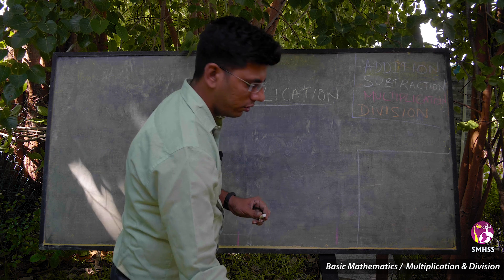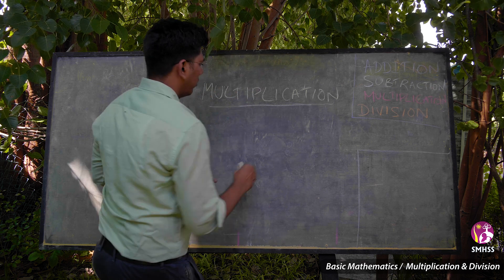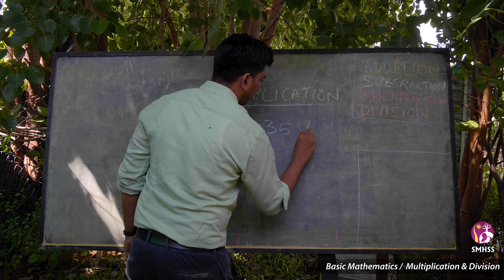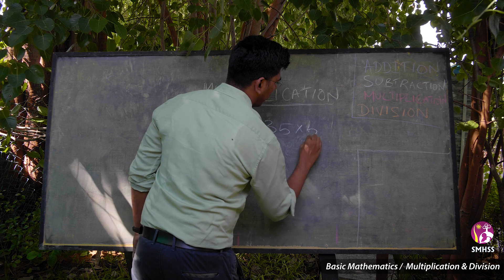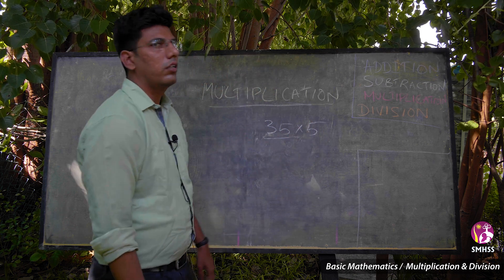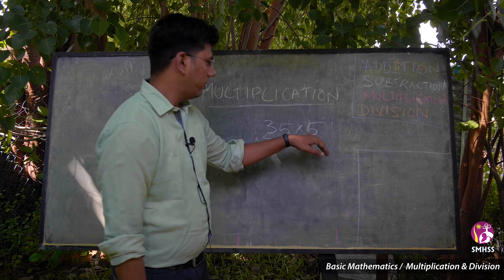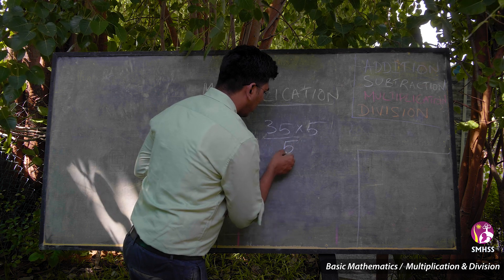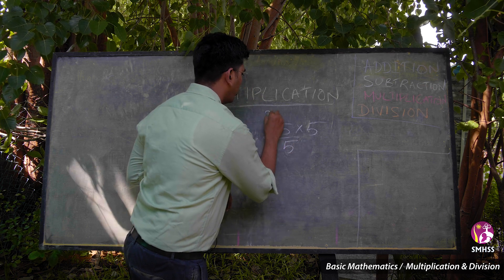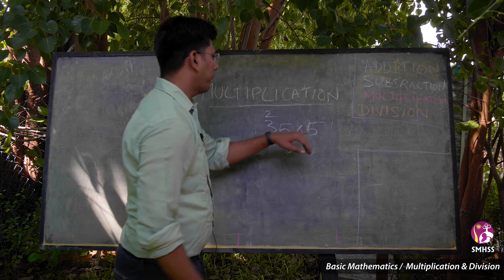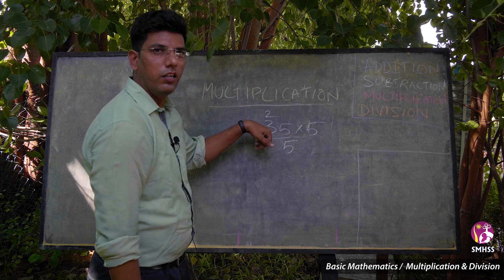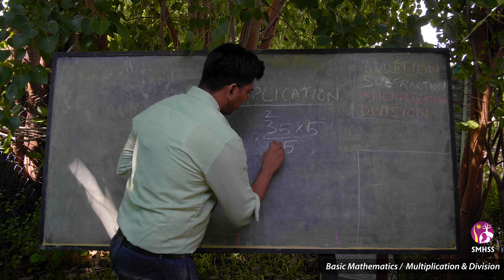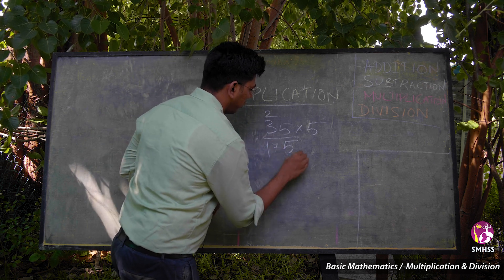Another example: 35 into 5. 5 fives are 25 — I will keep this 2 here. 5 threes are 15, 15 plus 2 equals 17. So the answer is 175.